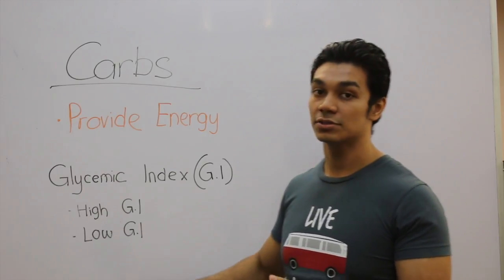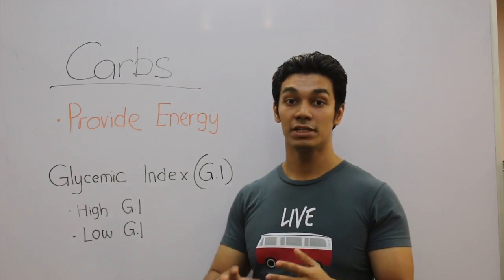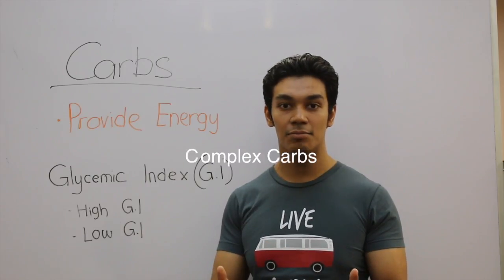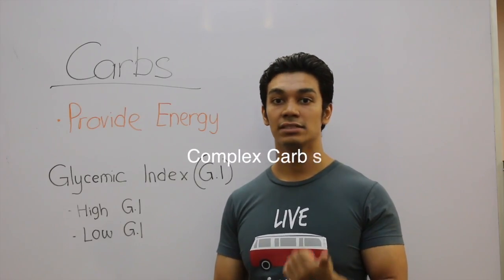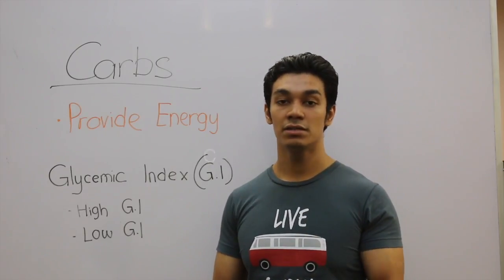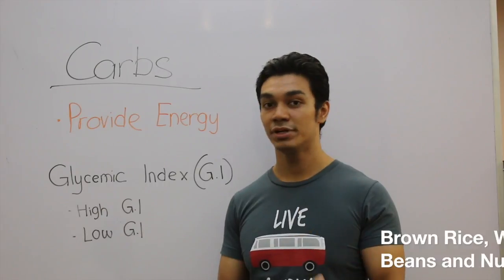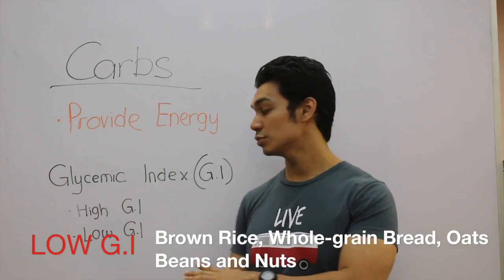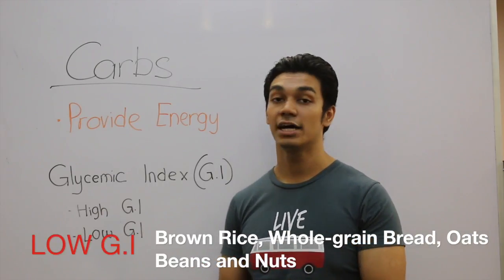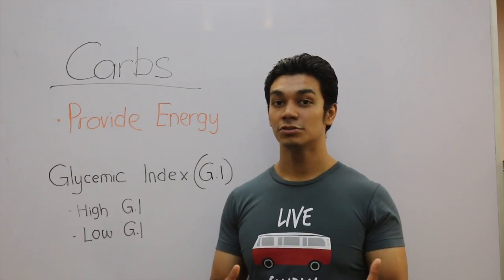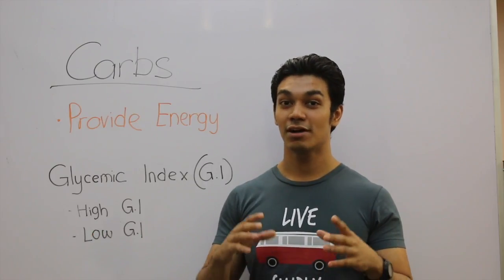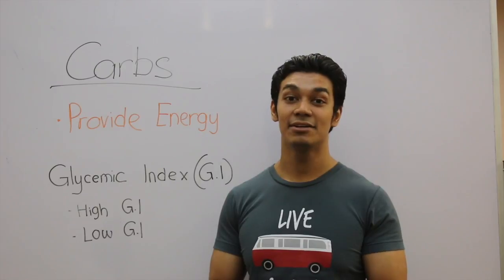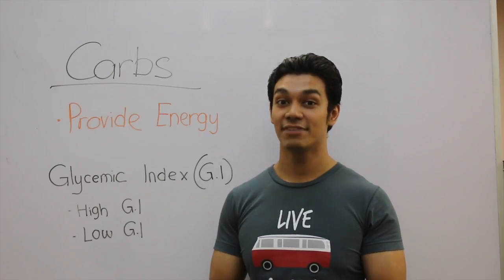Low GI carb sources are what we refer to as complex carbohydrates — brown rice, oatmeal, whole wheat bread, whole wheat pasta, sweet potatoes. All those fall under low GI. We would want to consume most of our carbohydrates from carb sources that have a low GI value.